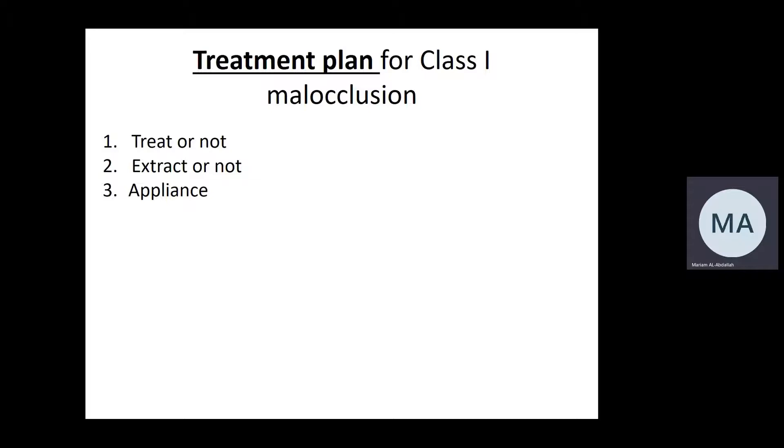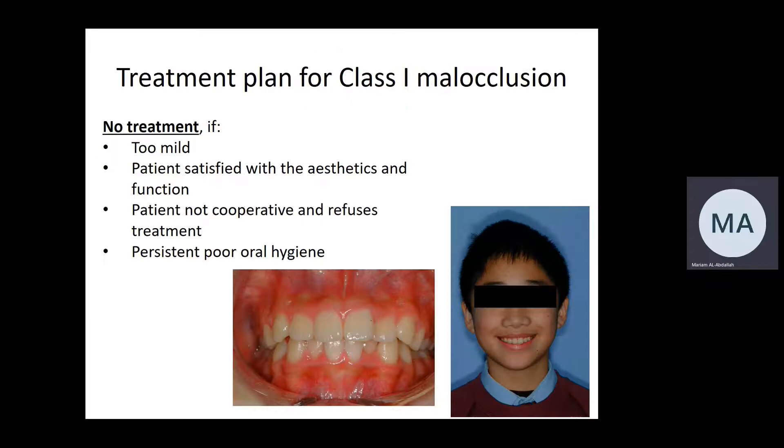After treatment objectives, we move to the treatment plan. You need to decide if the case requires extraction or non-extraction, and what type of appliance to use, considering anchorage, buccal segment relationship at the end of treatment, and retention. In class 1 malocclusions, we really need to consider whether to treat at all. Extraction or non-extraction is an important decision, as is the type of appliance.